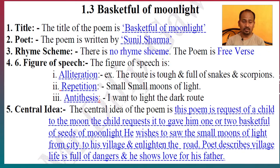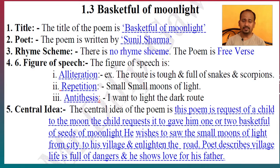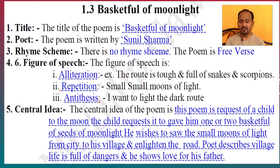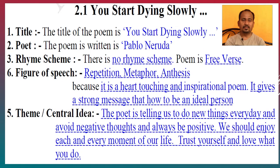Next point — central idea or theme of this poem. The central idea is: this poem is a request of a child to the moon. The child requests it to give him one or two baskets full of seeds of moonlight. He wishes to sow the small moons of light from city to village, enlighten the road, and the poet describes his village life as full of dangers. He also shows love for his father.